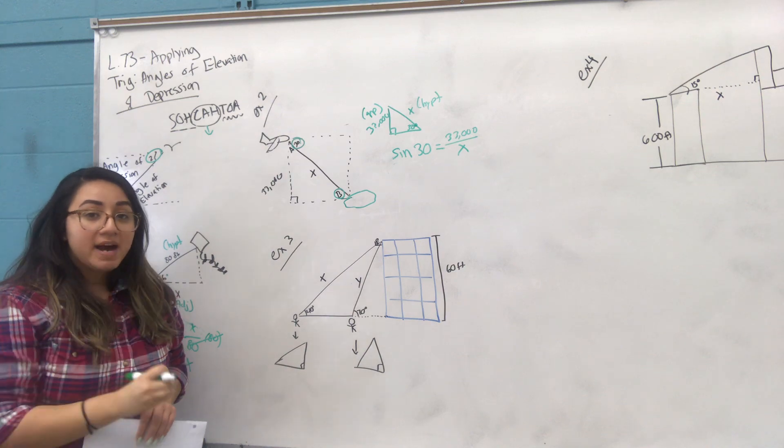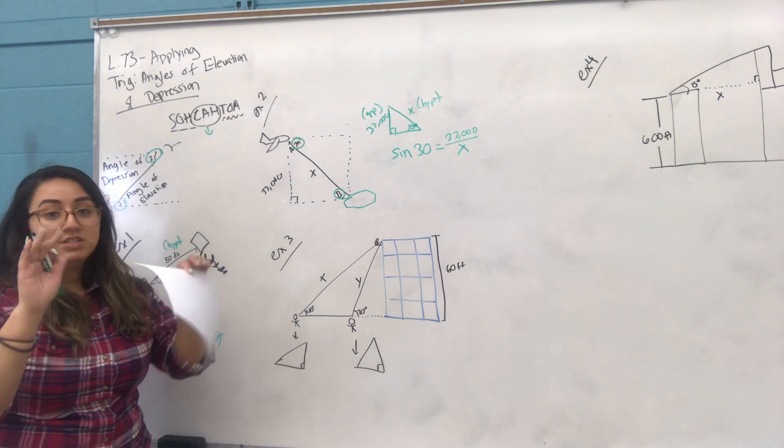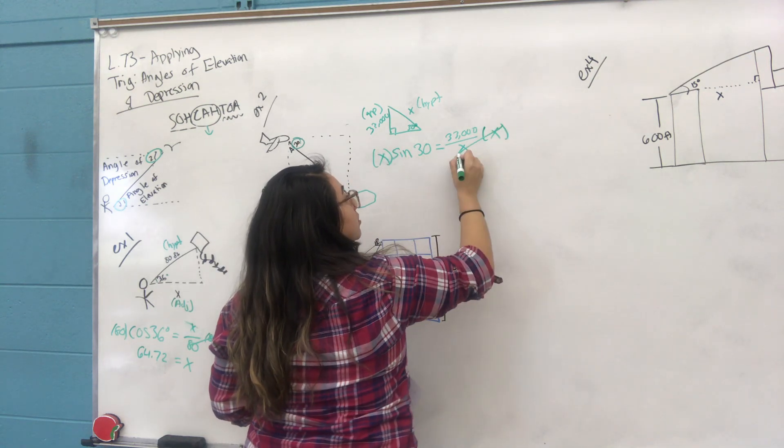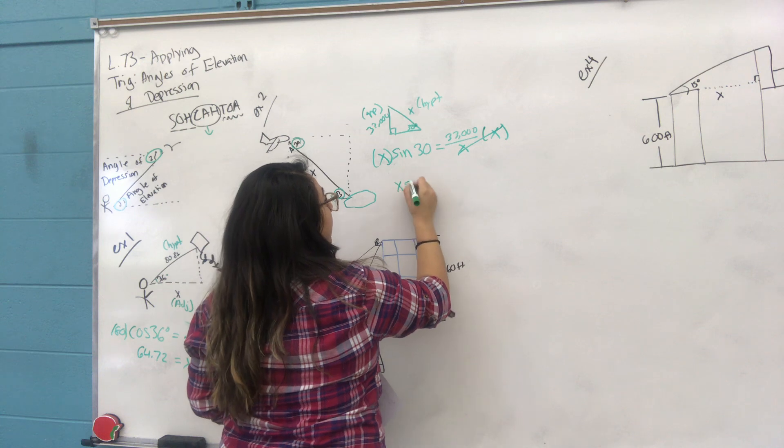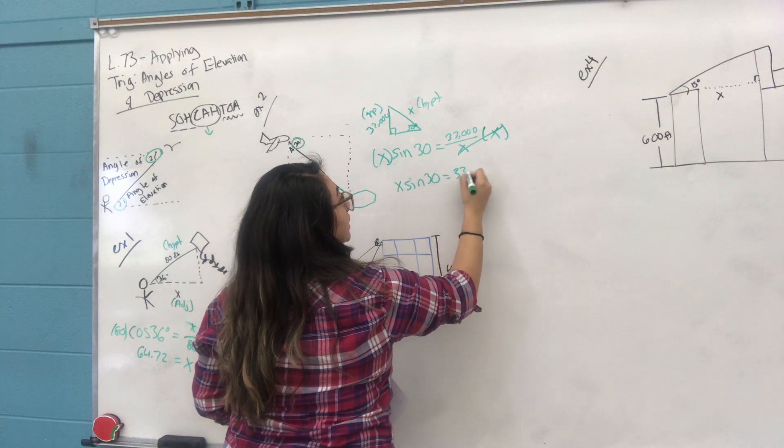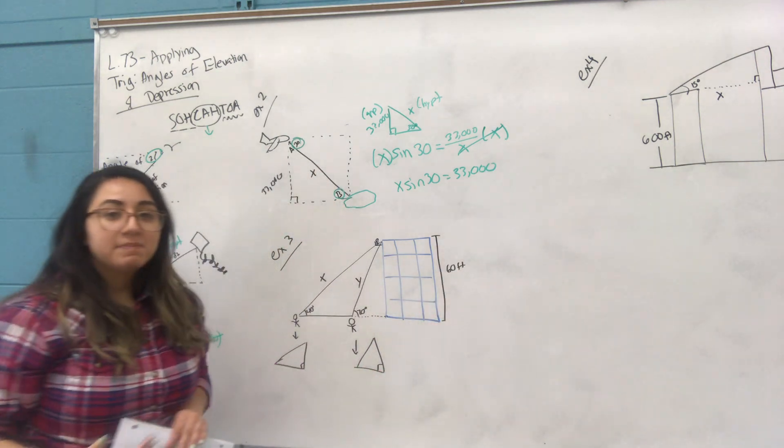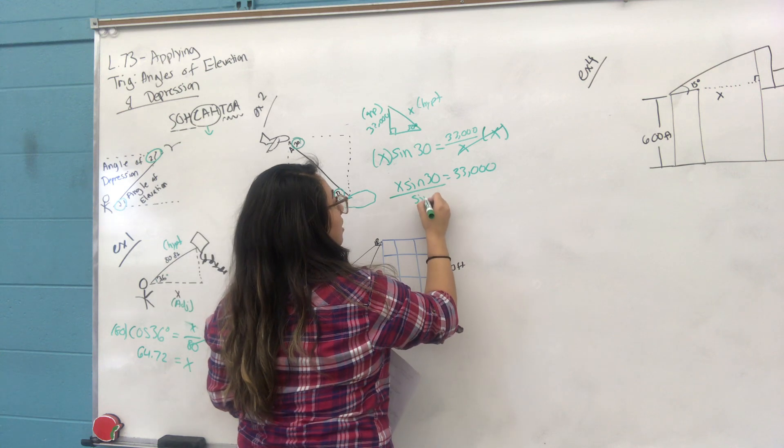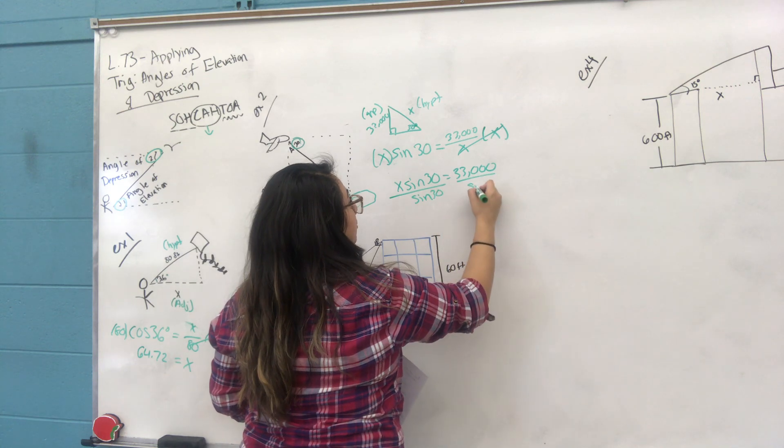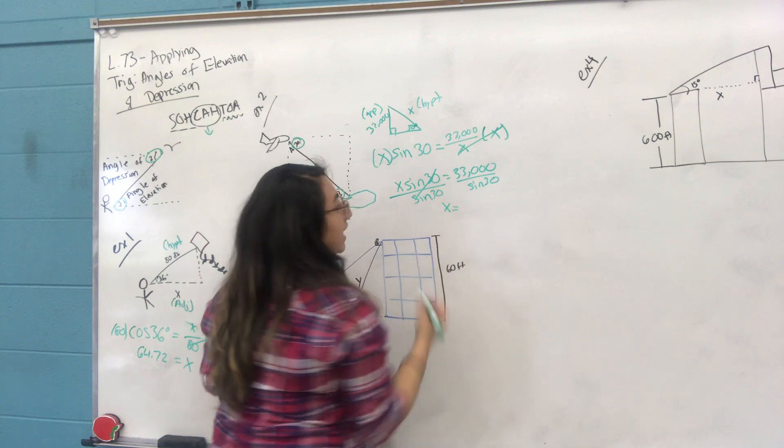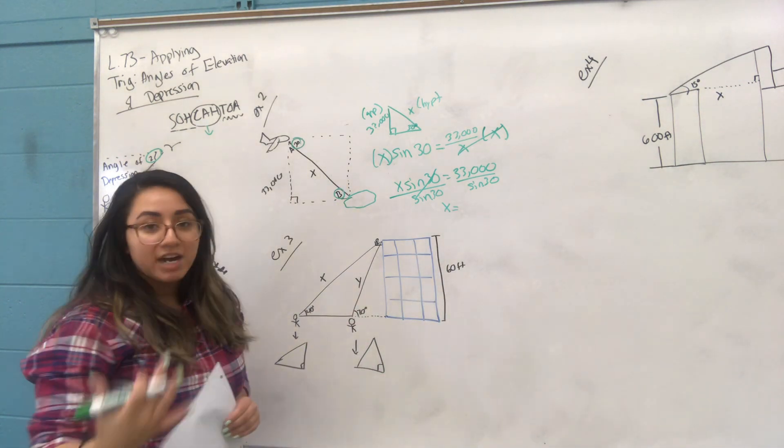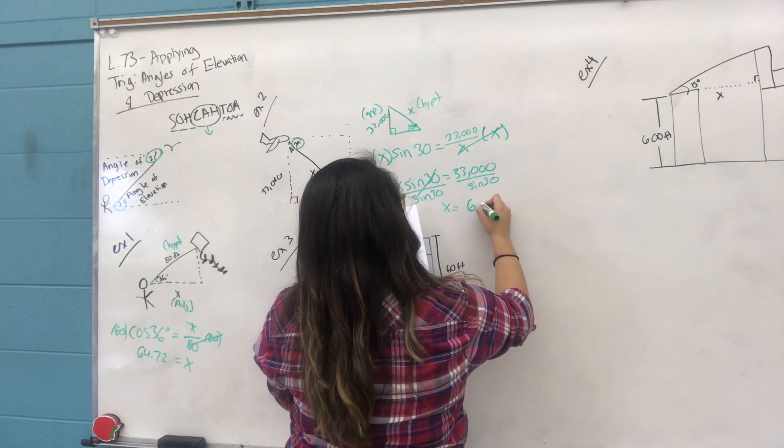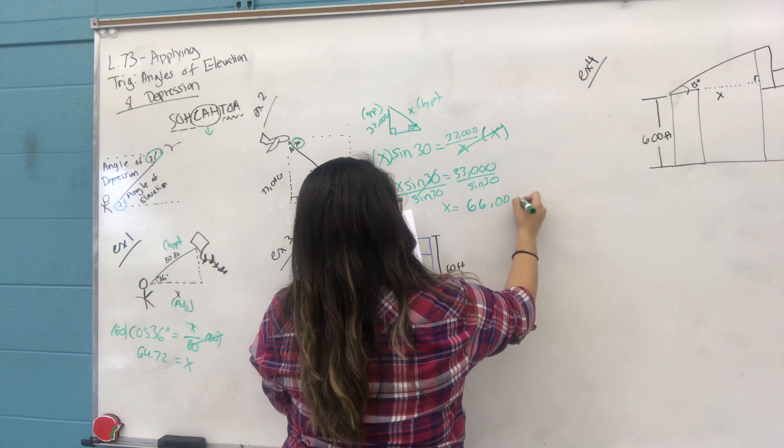In this case, you can't. So what you could do is multiply both sides by x. You get x sine of 30 equals 33,000. You don't have x by itself, but you don't have a fraction anymore. Now to get x by itself, divide both sides by sine of 30. When you calculate 33,000 divided by sine of 30, you end up with about 66,000 feet.